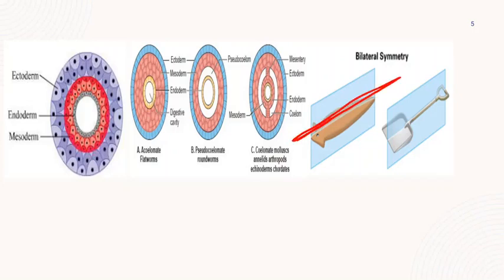When we divide the planaria by cutting through this line or plane, it will divide into two equal halves. These are the typical characteristics of the planarians.